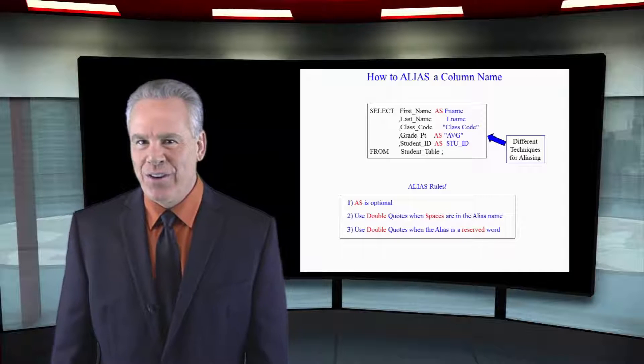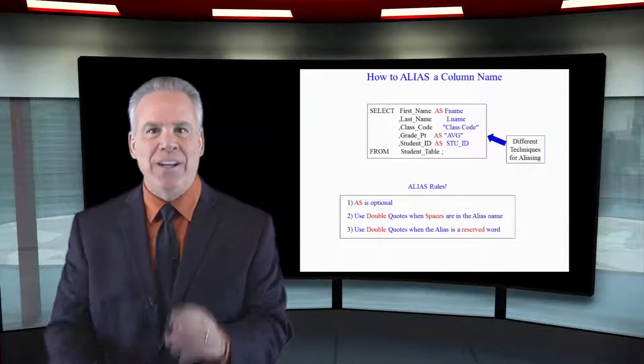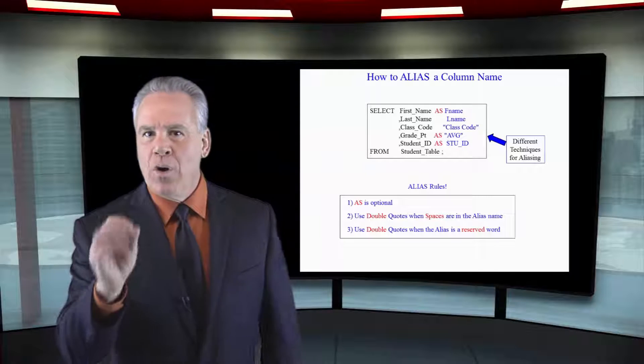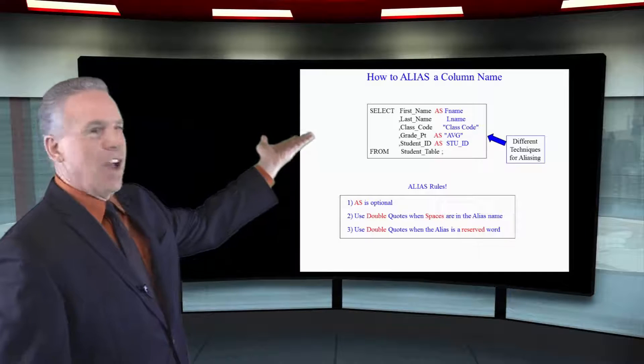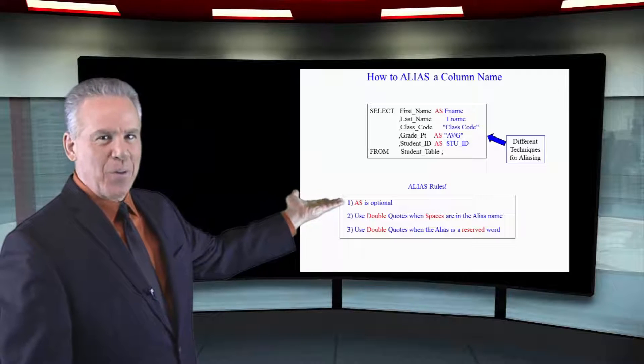One thing you're going to see is aliasing. You can alias a table or a column name. Here is an example of aliasing five different ways.